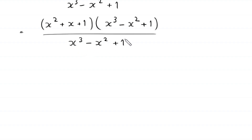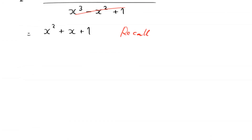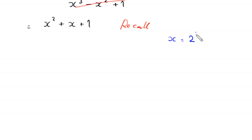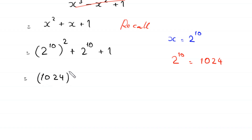Now, (x cubed minus x squared plus 1) cancels with the denominator (x cubed minus x squared plus 1), so we are left with only x squared plus x plus 1. Recalling that we supposed x is equal to 2 to the power 10, this expression becomes 2 to the power 10, squared, plus 2 to the power 10, plus 1.